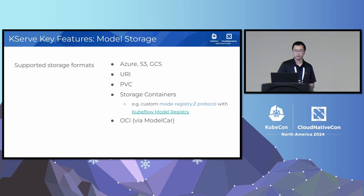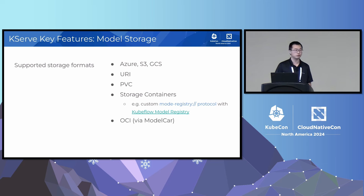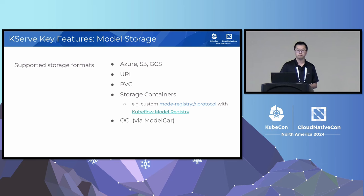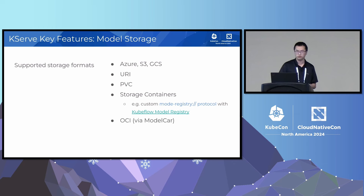Another core feature is model storage. KServe supports multiple storage formats — S3-compatible formats, URIs, and Kubernetes PVCs. If those don't meet your use case, you can define your own storage container with your own protocols to your model registry. One example is using the Kubeflow model registry so that models can be stored, managed, and versioned along with their associated metadata. In your InferenceService spec you just specify the path to the model in the registry using the new protocol.